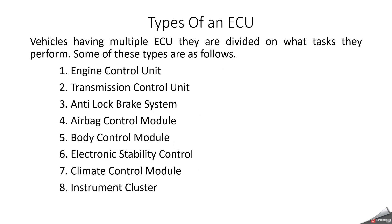Types of ECU. A vehicle has multiple ECUs divided by the tasks they perform. The engine control unit controls engine functions such as fuel injection, ignition timing and idle speed. The transmission control unit manages automatic or semi-automatic transmission functions including gear selection, shift points and torque converter lockup. The anti-lock braking system ECU manages the ABS system, which prevents wheel lockup during hard braking and improves vehicle control.